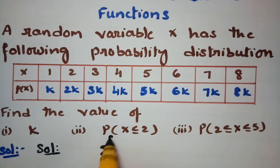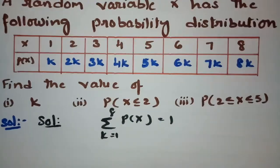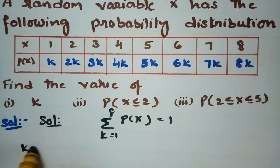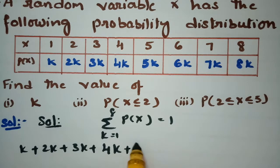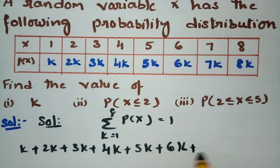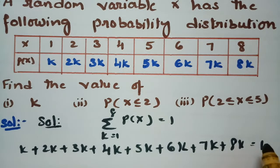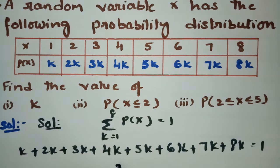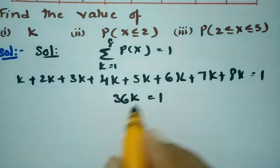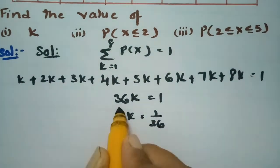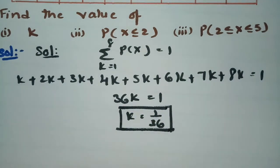Since the total probability must equal 1, we add up all the probabilities: k + 2k + 3k + 4k + 5k + 6k + 7k + 8k = 1. After adding all these, we get 36k = 1, so the value of k is equal to 1/36.